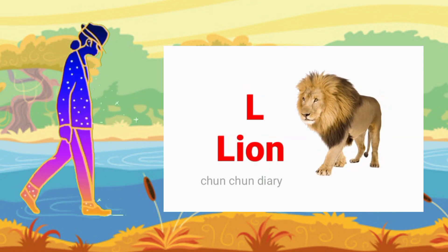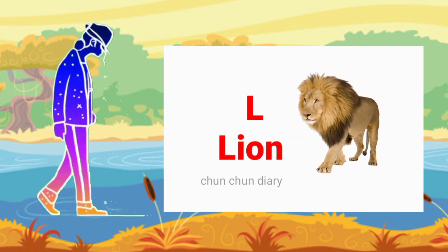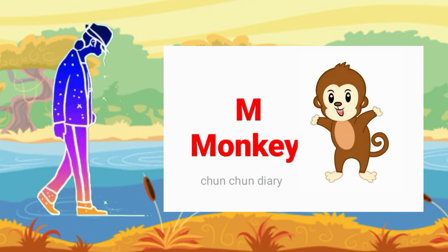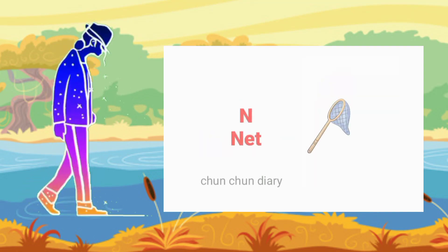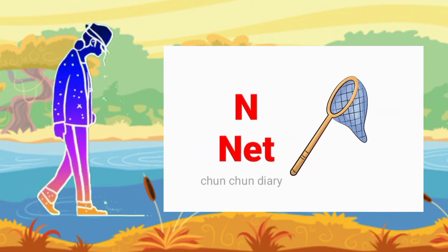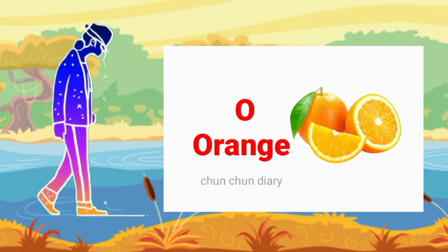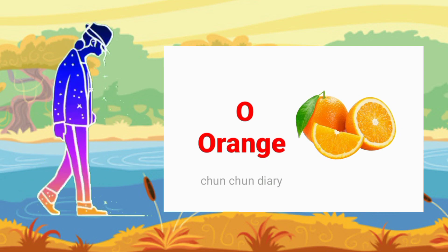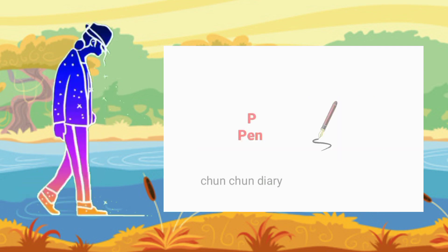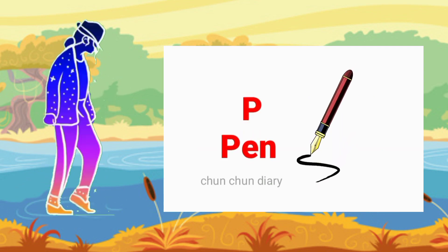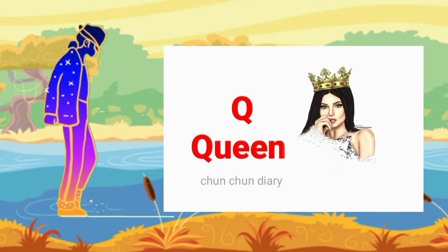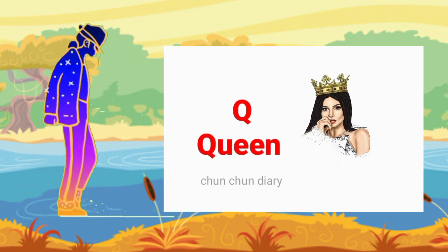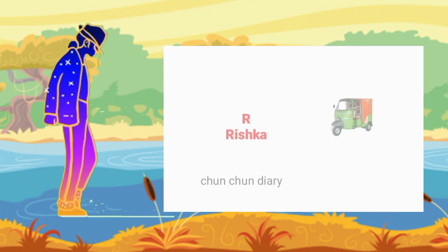L for lion, M for monkey, N for net, O for orange, P for pen, Q for queen.